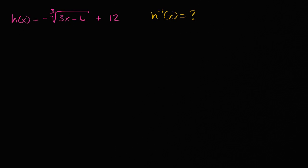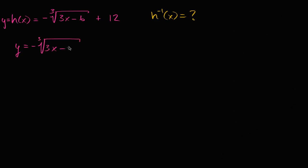If we say that y is equal to h of x, we could say that y is equal to the negative of the cube root of three x minus six plus 12. This gives us our y, and you could think of y as a member of the range in terms of what our input is, in terms of a member of the domain. But we want to go the other way around.